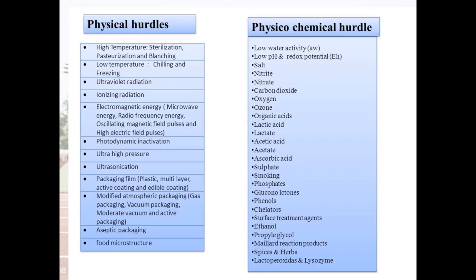Modified atmosphere packaging includes gas packaging, vacuum packaging, moderate vacuum, and active packaging, as well as aseptic packaging and food microstructure. Physico-chemical hurdles include low water activity, low pH, redox potential, salt, nitrite, nitrate, carbon dioxide, oxygen, ozone, organic acids, lactic acid, smoking, phosphates, low tones, phenols, ethanol, and spices and herbs.